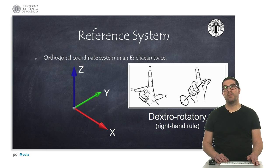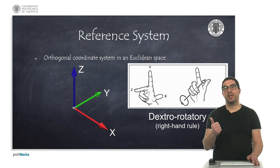The arrangement of the axes must follow the right-hand rule, so the reference system is dextrorotatory. A positive rotation is performed with the thumb pointing to the rotation axis and the fingers curled, as shown.